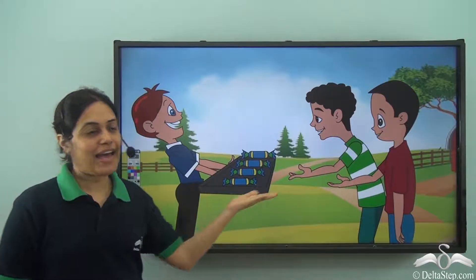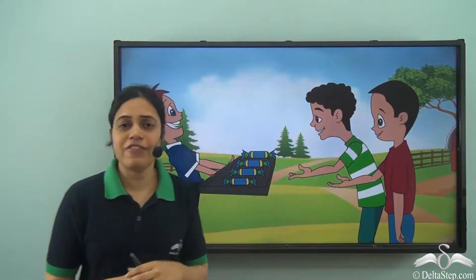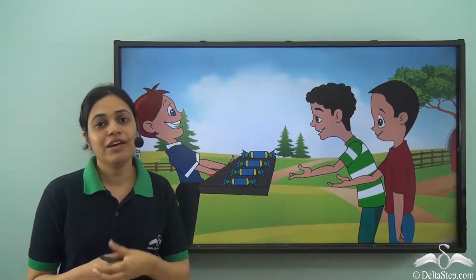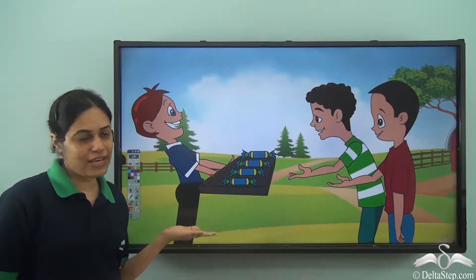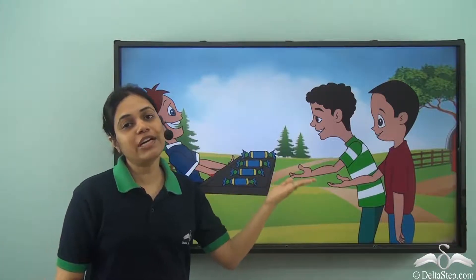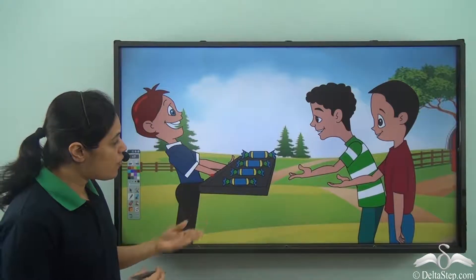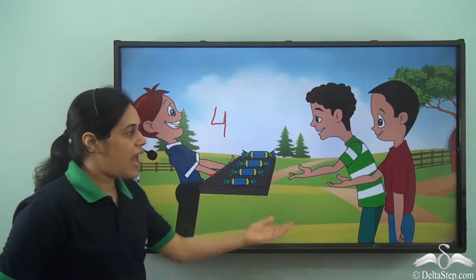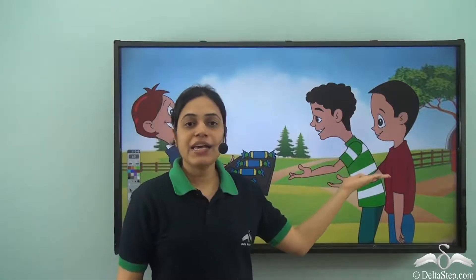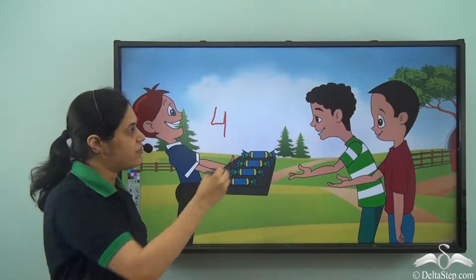This is Rohan and these are Rohan's friends. Rohan's friends are very happy because it's Rohan's birthday and he's distributing toffees among his friends. Rohan has four toffees and he wants to distribute them between two of his friends.